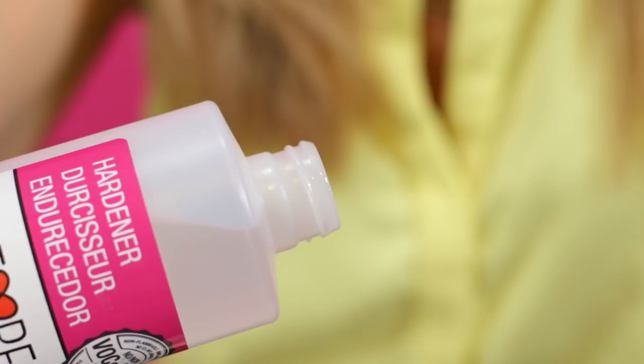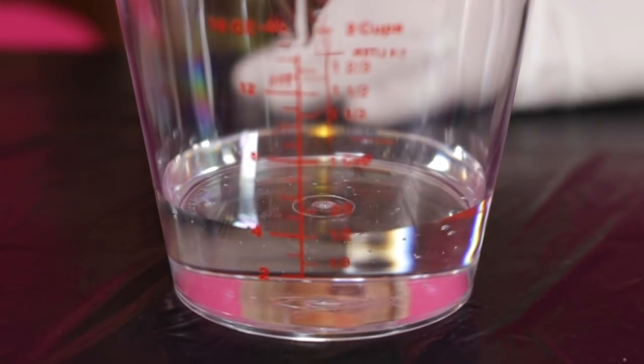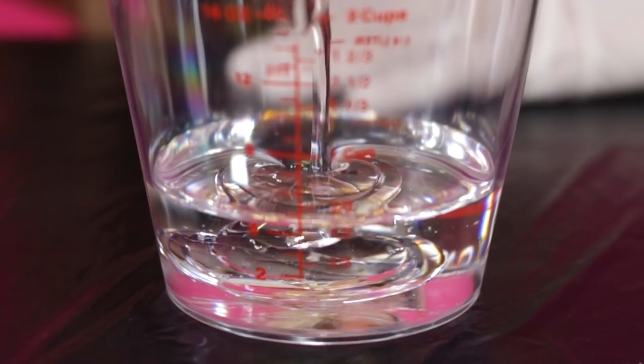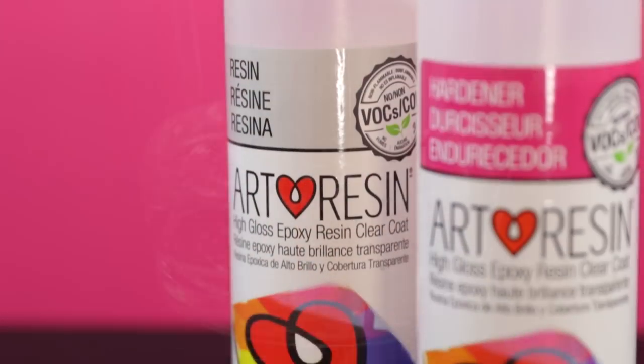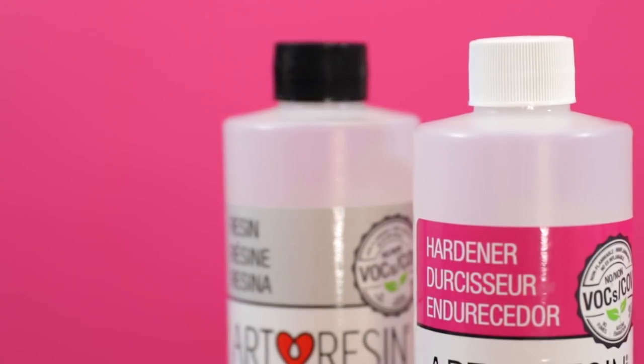With gloves on, pour by volume precisely equal amounts of room temperature resin and hardener into a mixing container. Remember to replace the proper cap on each bottle once you're done pouring. Black for resin, white for hardener.